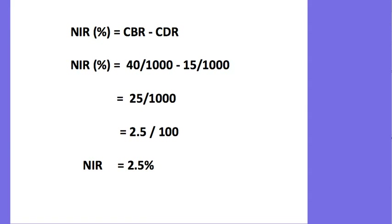To compute NIR, you subtract the crude birth rate minus the crude death rate. For instance, if you have 40 per 1,000 as your crude birth rate minus 15 per 1,000 as your crude death rate, you get 25 per 1,000. To make it a percent, move the decimal one place to the left — between the 2 and the 5 — and you get 2.5 over 100, which is 2.5%. A caution: if you ever get a number for your NIR greater than 4%, you probably forgot to move the decimal point. A 4% NIR is very, very high and unusual, so if you get something like 29, 8, or 7, check yourself.